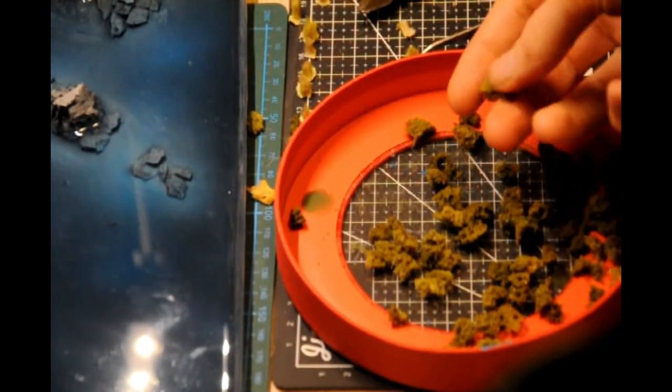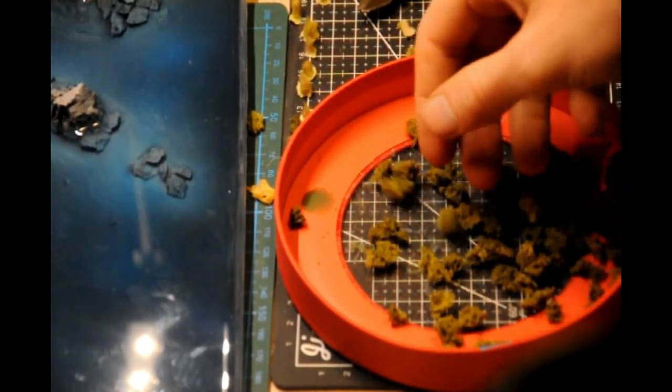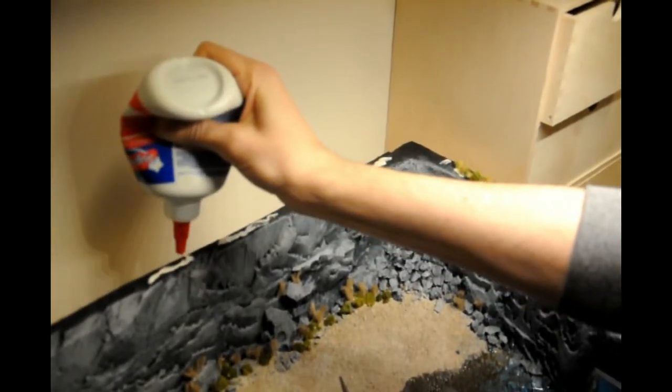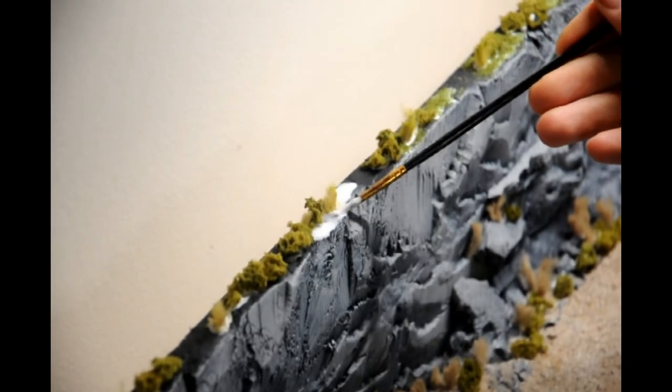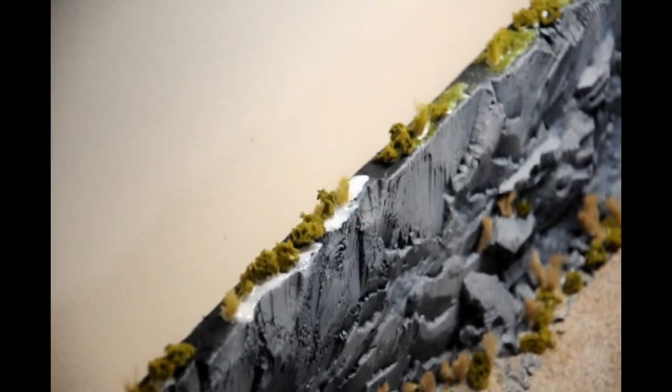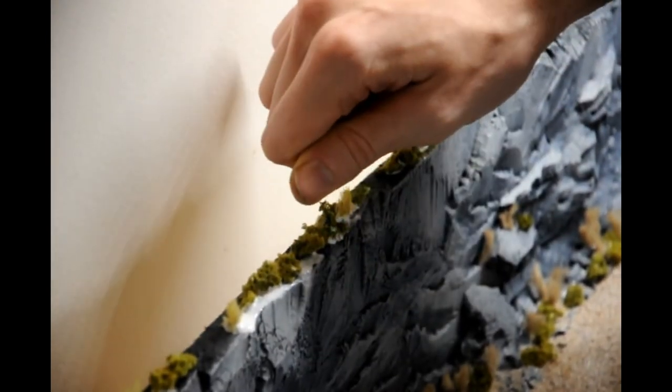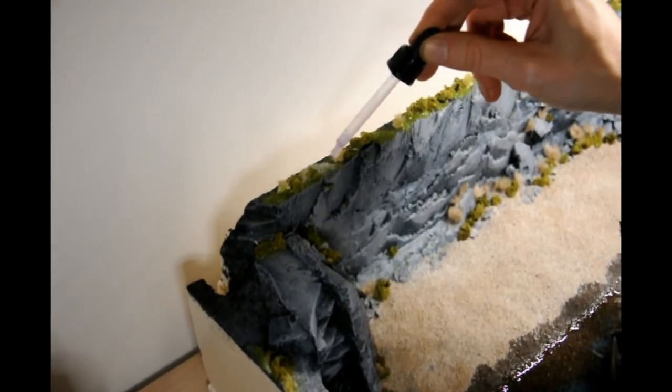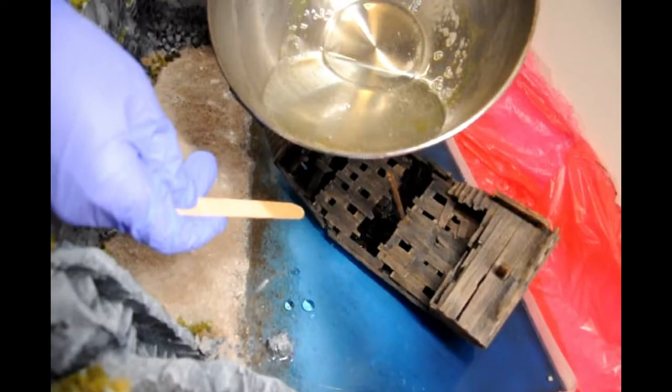Now, let's make this landscape greener. I'm just adding the flock to the crevices and places where I think it fits. And on top of the rock wall, I'm putting some grass. In order to ensure that everything stays where I want, I'm adding afterwards a mix of white glue and water with the help of a dropper.